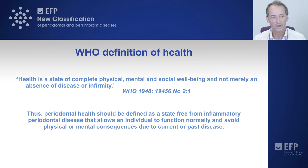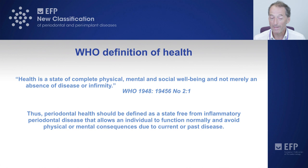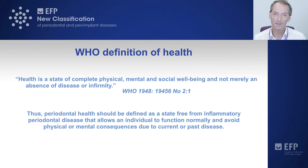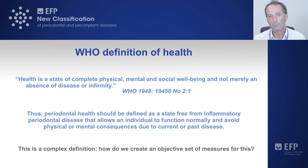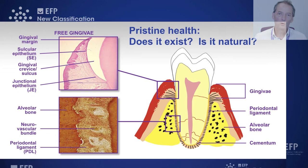The Lang and Barthold paper defined periodontal health initially as a state free from inflammatory periodontal disease that allows an individual to function normally and to avoid the physical and mental consequences that may arise due to current or past disease — for example, recession could cause aesthetic problems, which is past disease but could still impact on well-being. This was a long definition, probably too complex, and so in the consensus report we simplified it quite significantly.